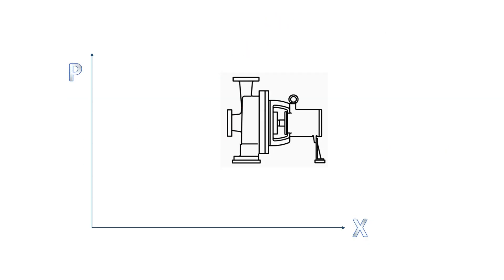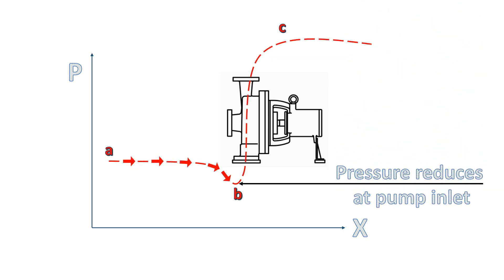If we draw the pressure profile across the pump, it will look like this. Here, this line represents the pressure profile across the pump. As you can see, pressure is continuously decreasing as the fluid approaches the pump inlet. And the pressure drops to minimum value at point B, which is located at the impeller I. The pressure starts to increase as fluid approaches pump outlet and reaches a maximum value at pump outlet nozzle.